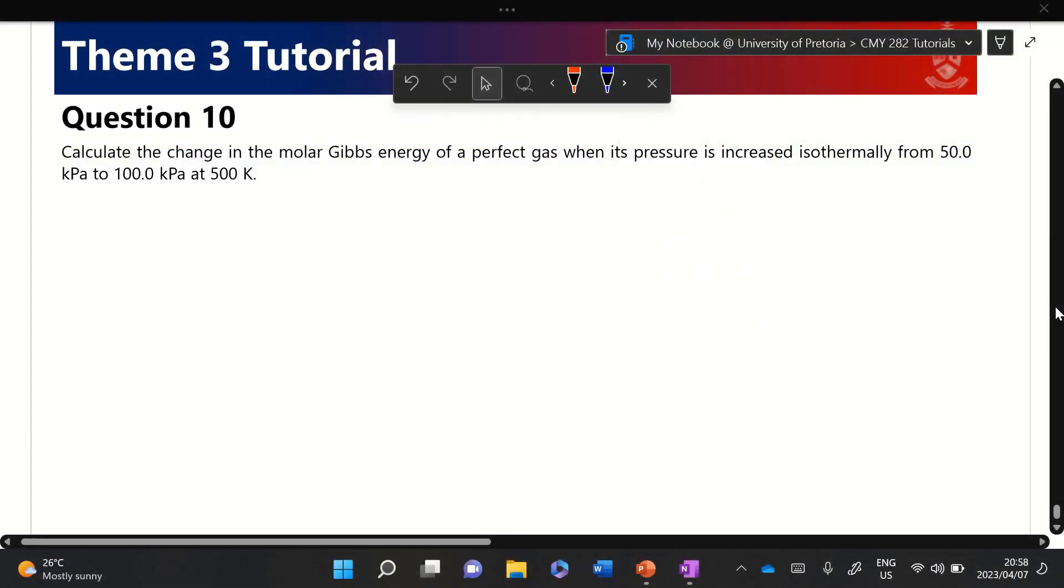All right, so let's look at question 10 of the tutorial. We're asked to calculate the change in molar Gibbs energy of a perfect gas when its pressure is increased isothermally from 50 kPa to 100 kPa at a specific temperature. Of course it's done isothermally, so that is the temperature. Basically, this is a straightforward application of the equation.